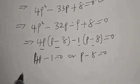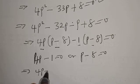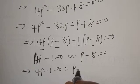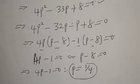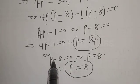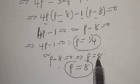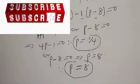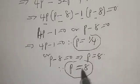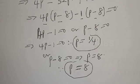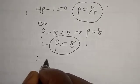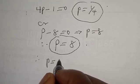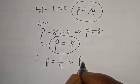From 4p minus 1 equal to zero, we get p equal to 1 over 4. Or from p minus 8 equal to zero, we get p equal to 8. Therefore our values of p are p equal to 1 over 4 or p equal to 8.